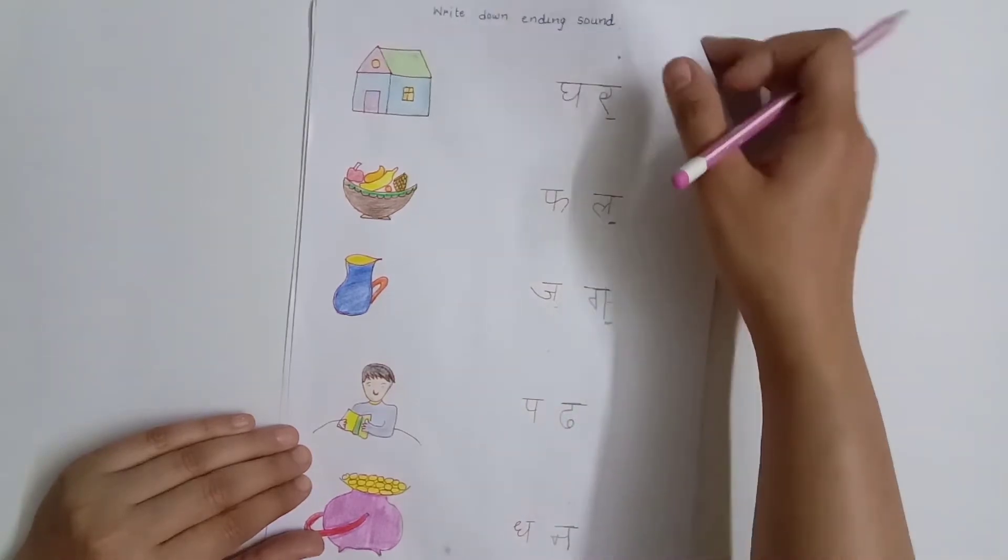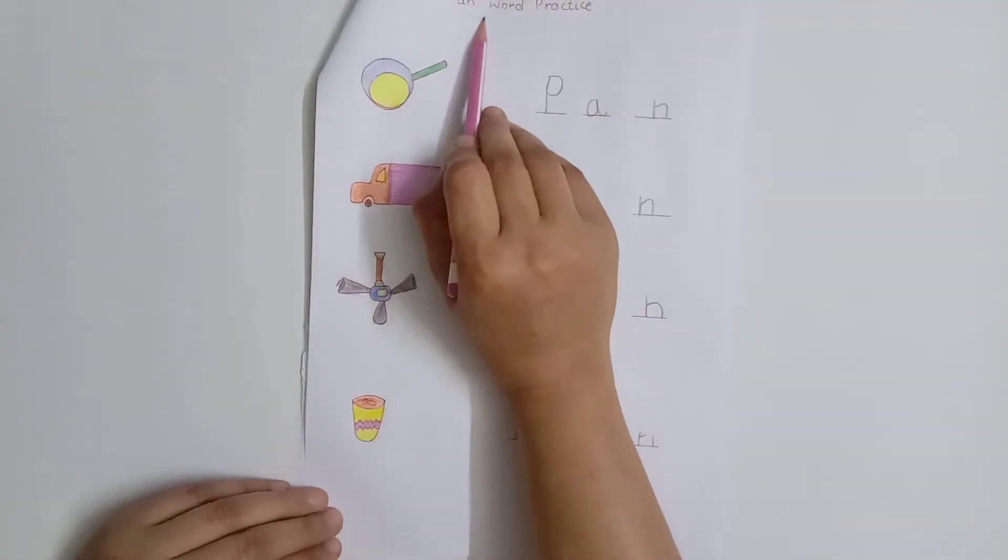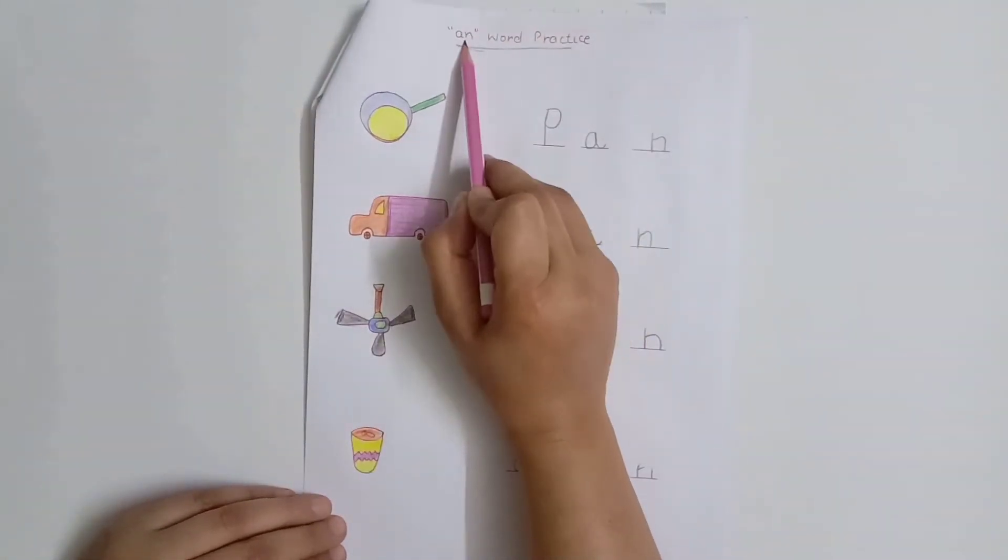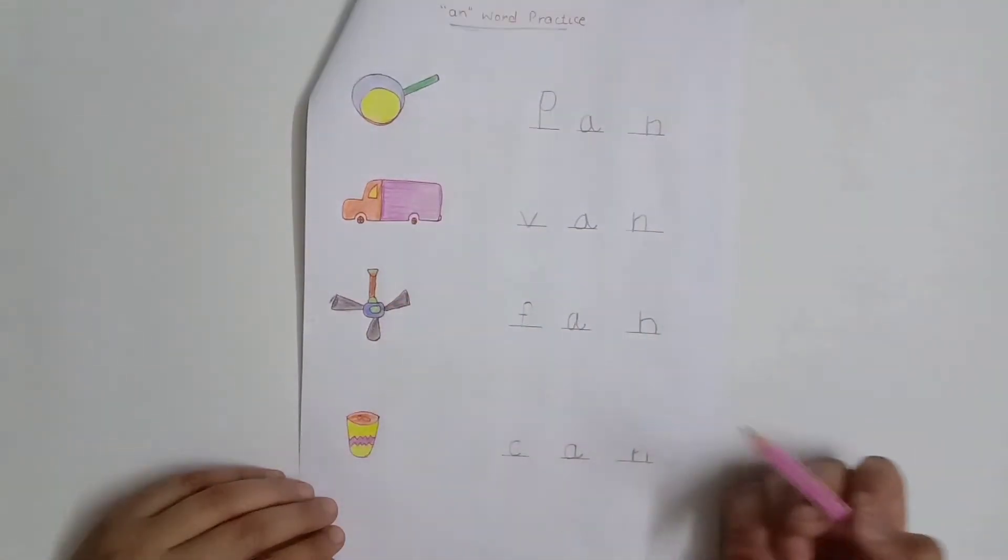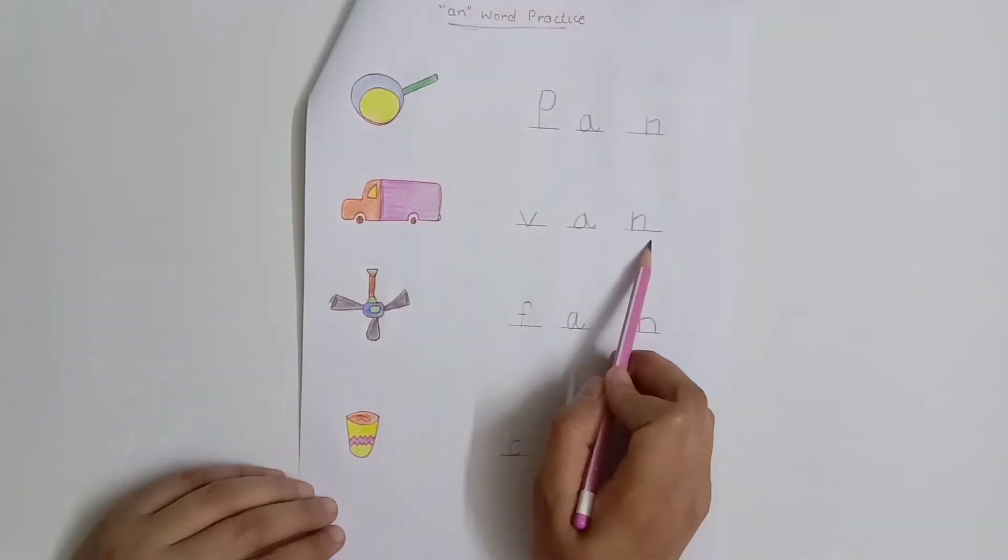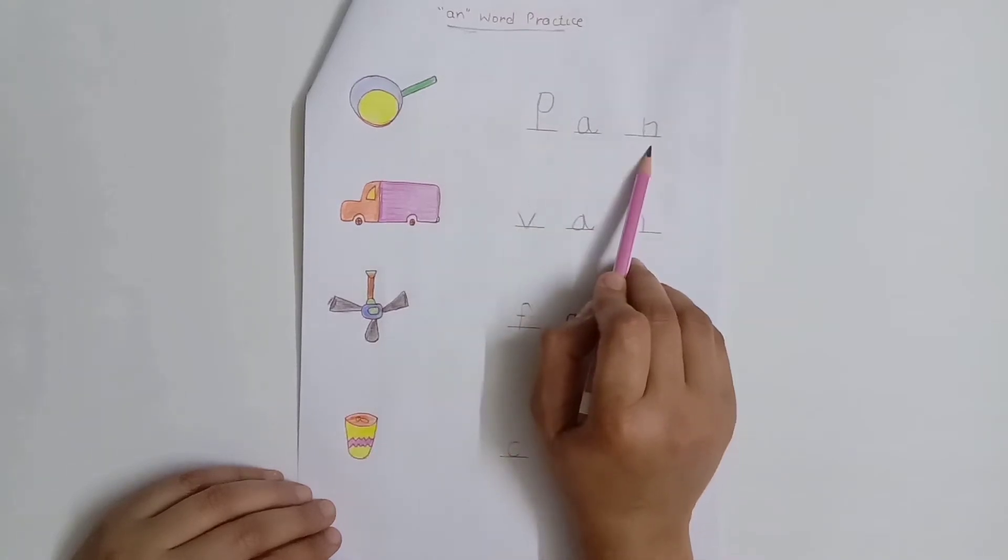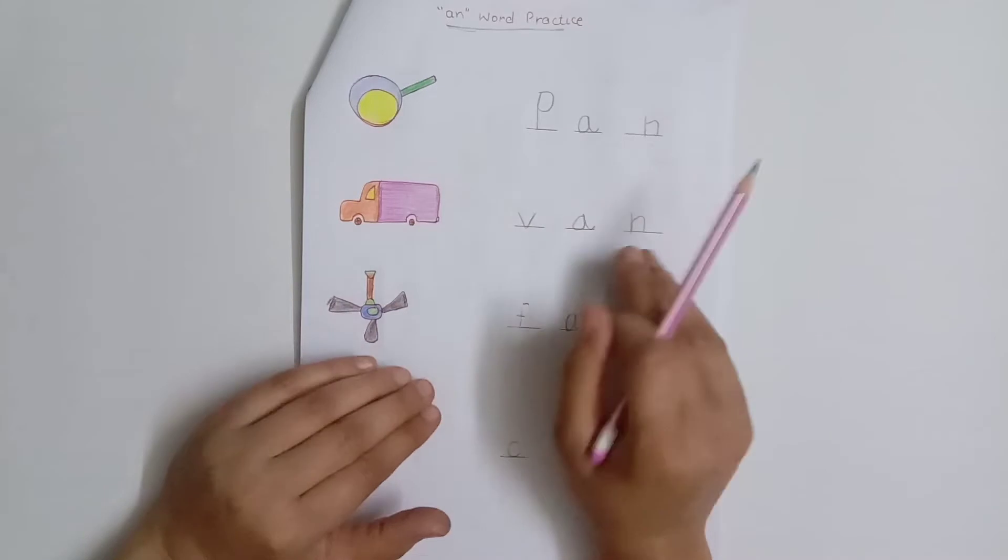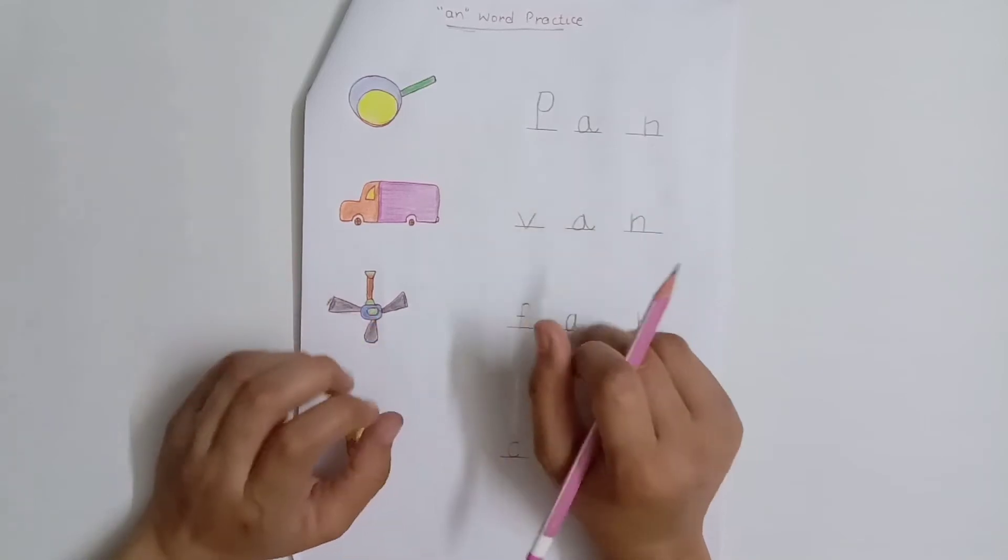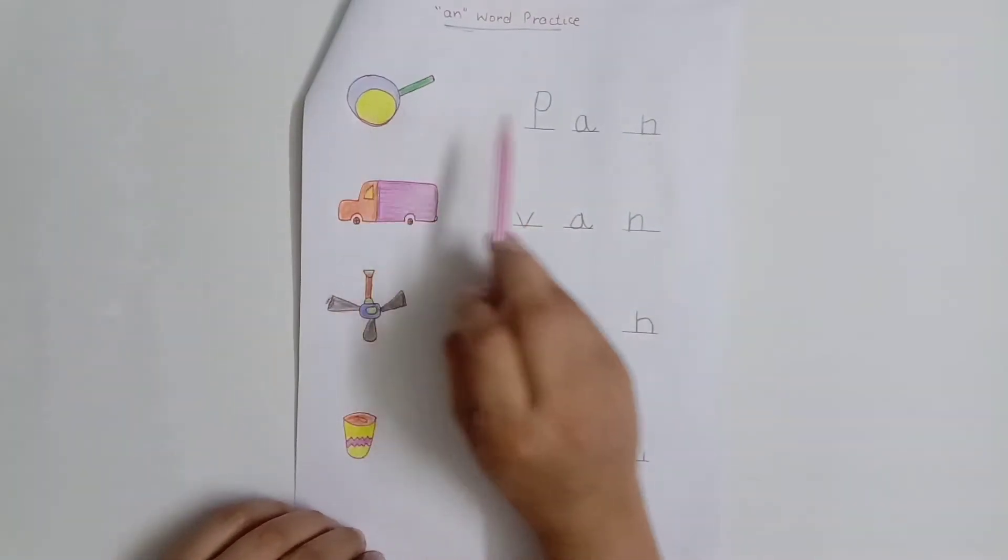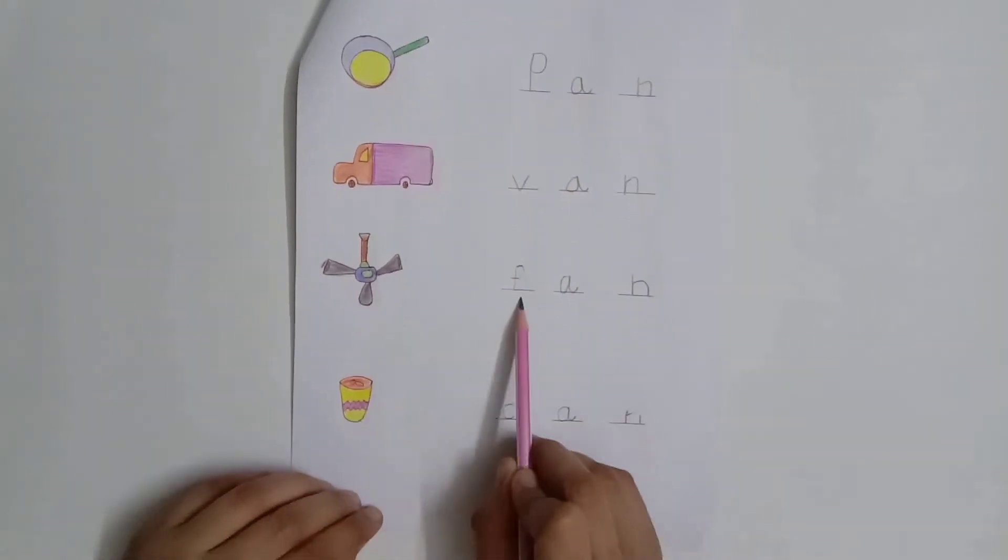After that, our next worksheet is an English worksheet - it is an 'and' word practice. On Monday I gave him 'at' word practice worksheet, so today I'm giving him 'and' word practice. I have drawn images on the left side and on the right side I have given him the spelling of the picture to write. For example, pan - it is 'and' pan. When the child writes the whole word, the grip improves. Van - 'and' van. Fan - 'and' fan. Can - 'and' can.